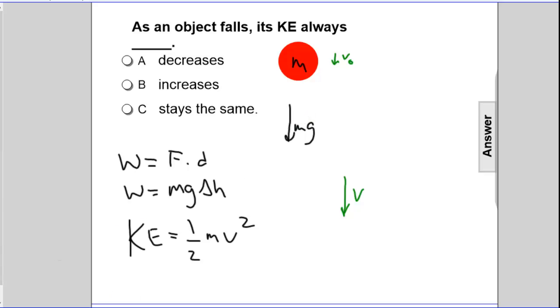And if work is done, or if a force acts in the direction of its height change, the work is positive. Positive work will cause an increase in velocity.